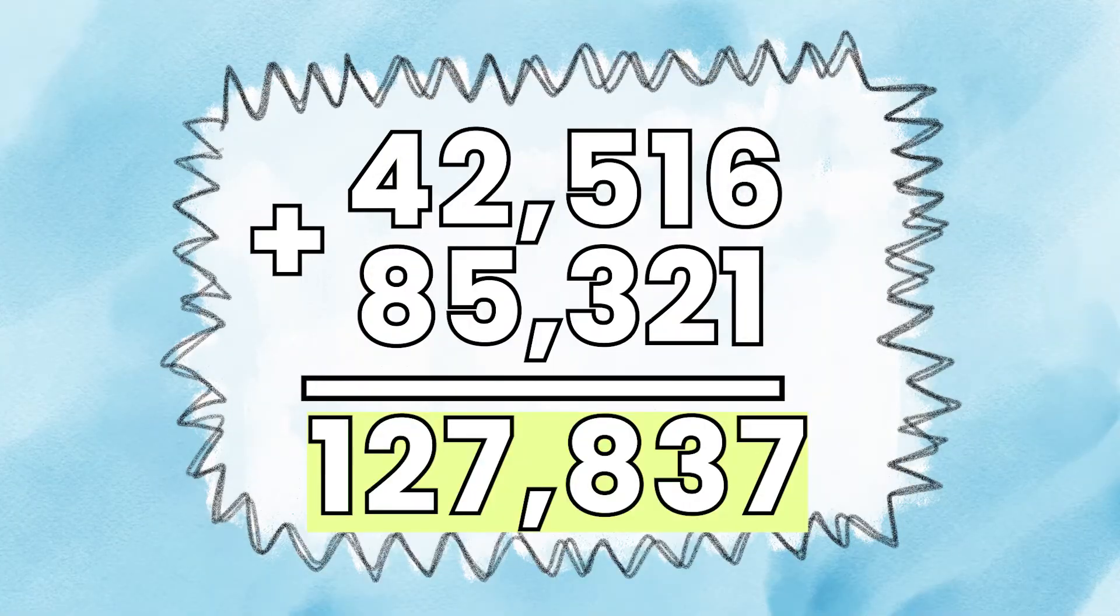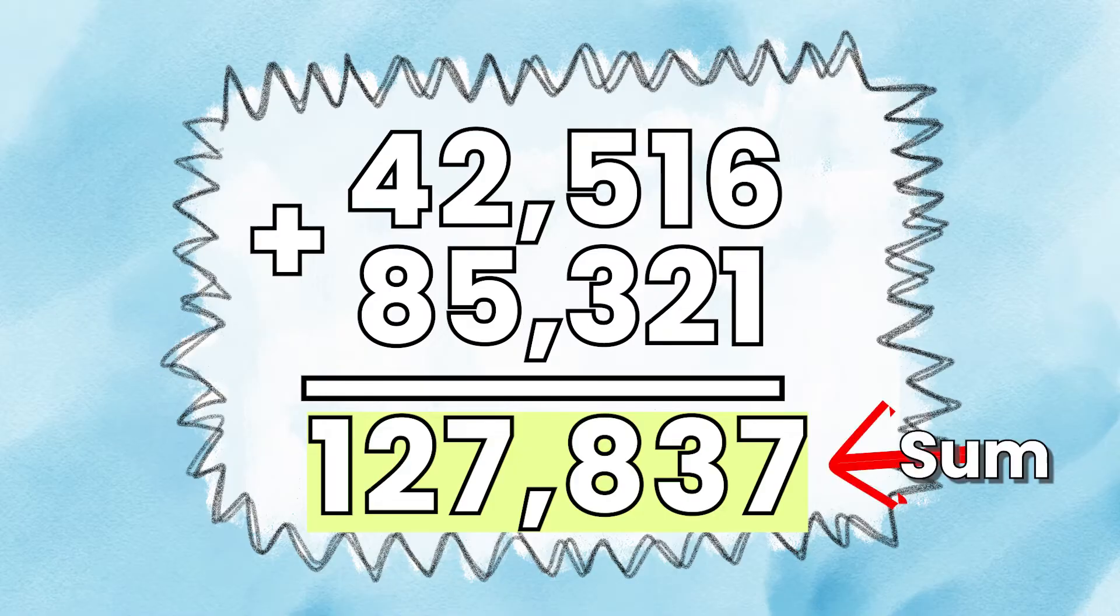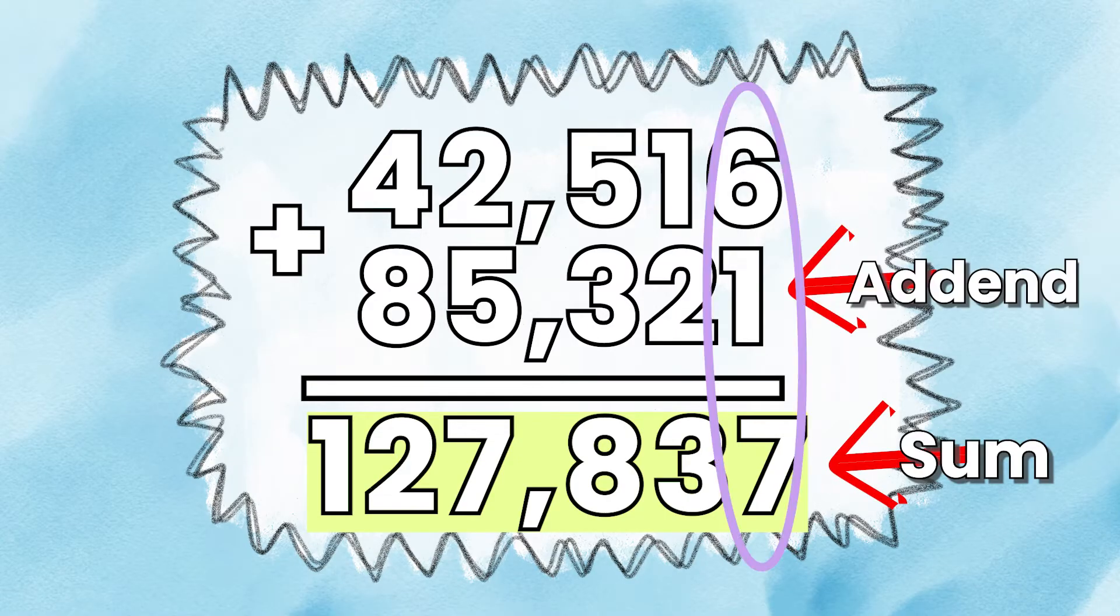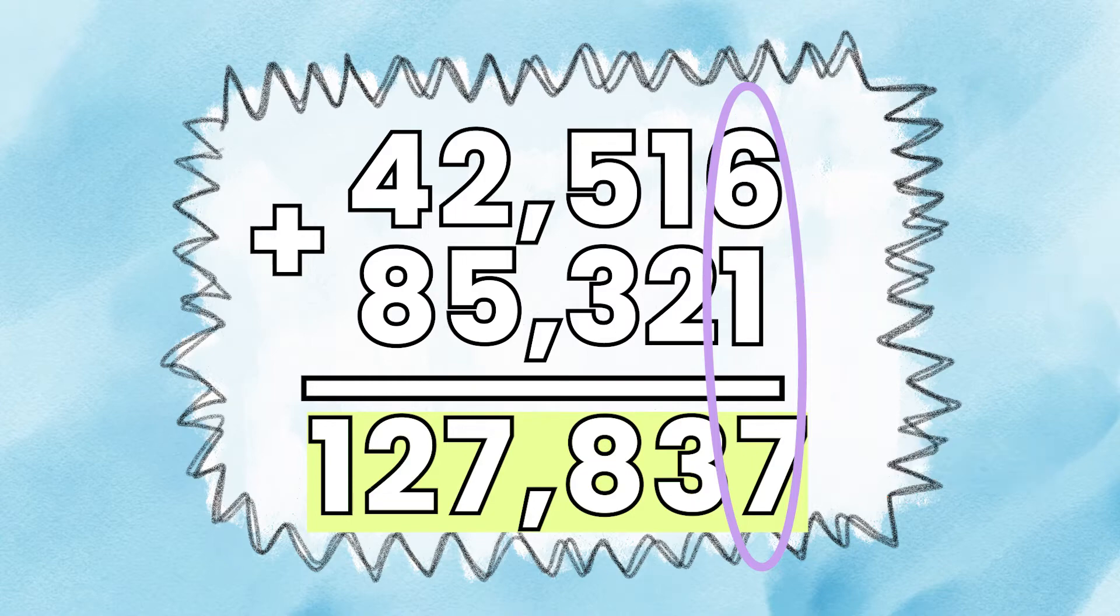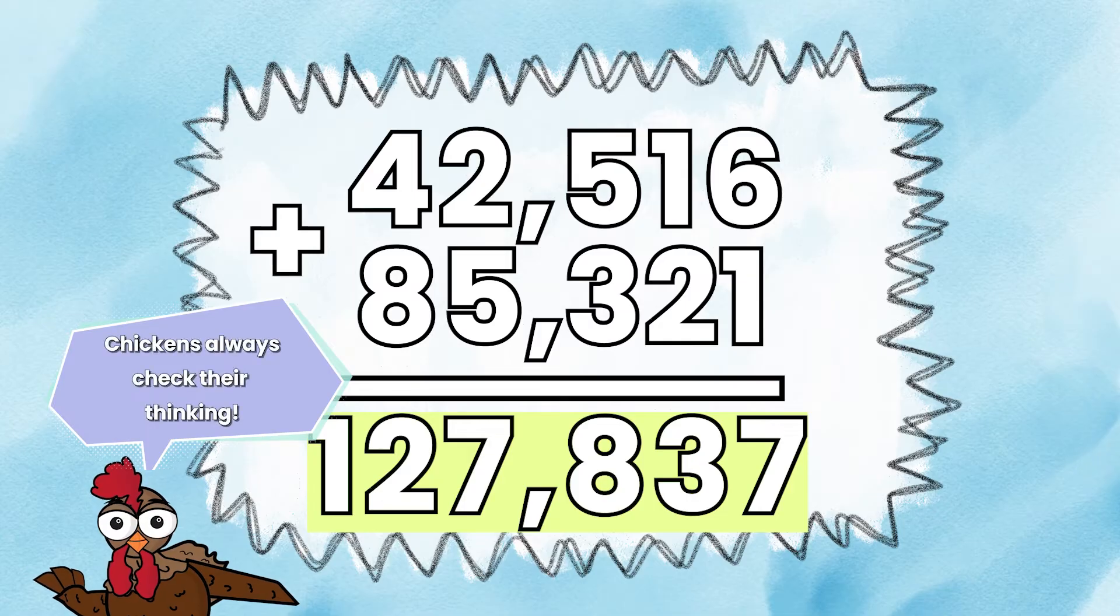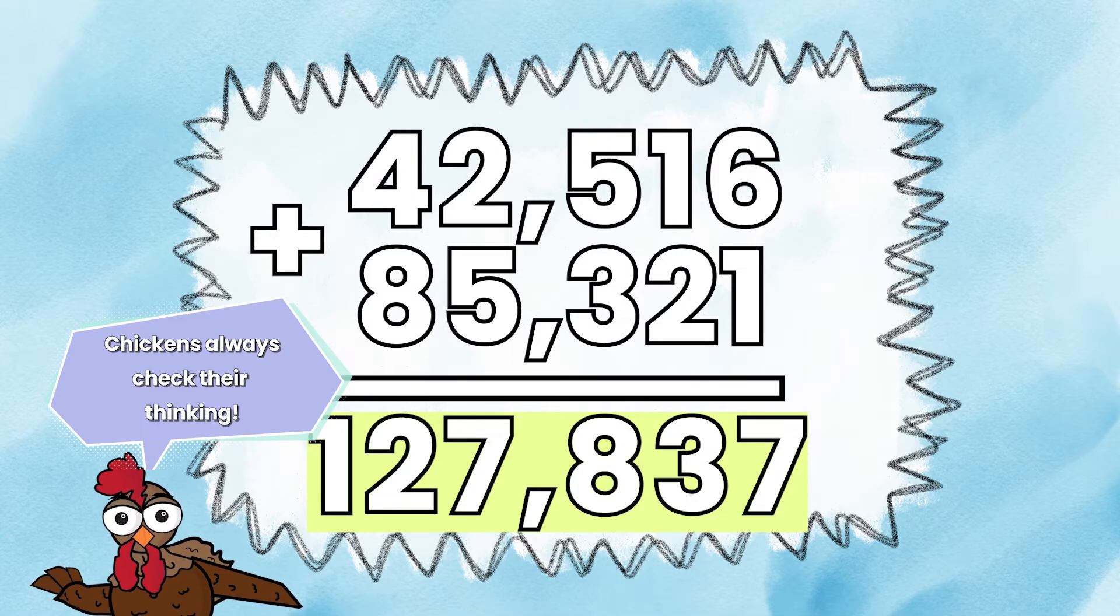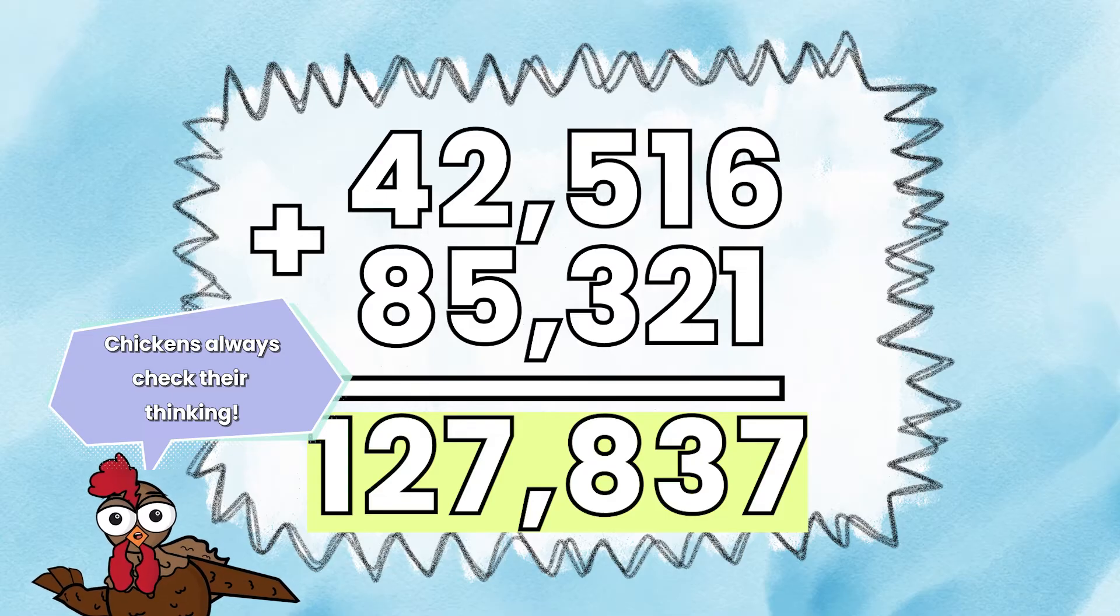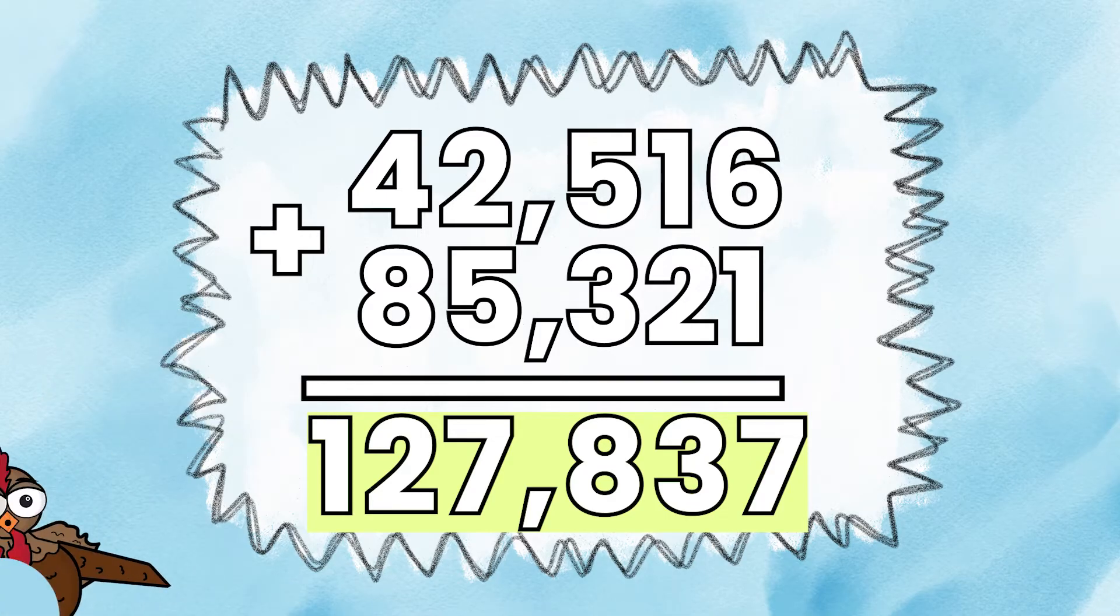So we've solved the problem. Is there a way to check my thinking? You can check your thinking by taking the sum or the answer of an addition problem and subtracting it from the addend or the number right above it. So 127,837 minus 85,321 should be 42,516 to check your thinking.